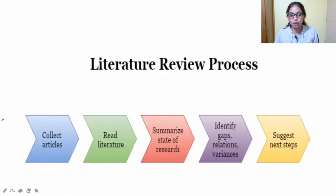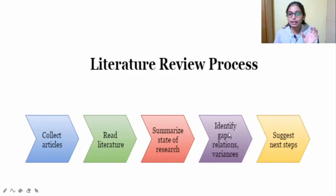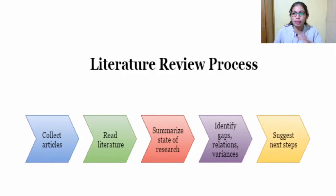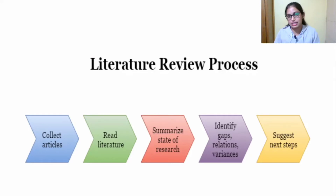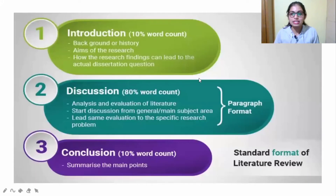The literature review process is: first, collect the articles; then read the literature; then summarize the state of research regarding your topic. Next, identify the gaps, relations, and variations across the many articles written by many authors, since research on a particular topic will have multiple researchers. Finally, suggest further steps based on what you found.